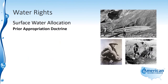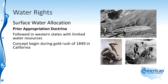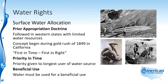The prior appropriation doctrine is followed in western states with limited water resources. This concept began during the gold rush of 1849 in California. It's known as the first-in-time, first-in-right doctrine, and priority is given to whoever was there first — that is, the longest user of the water source. The water must be used for beneficial use under this prior appropriation doctrine.